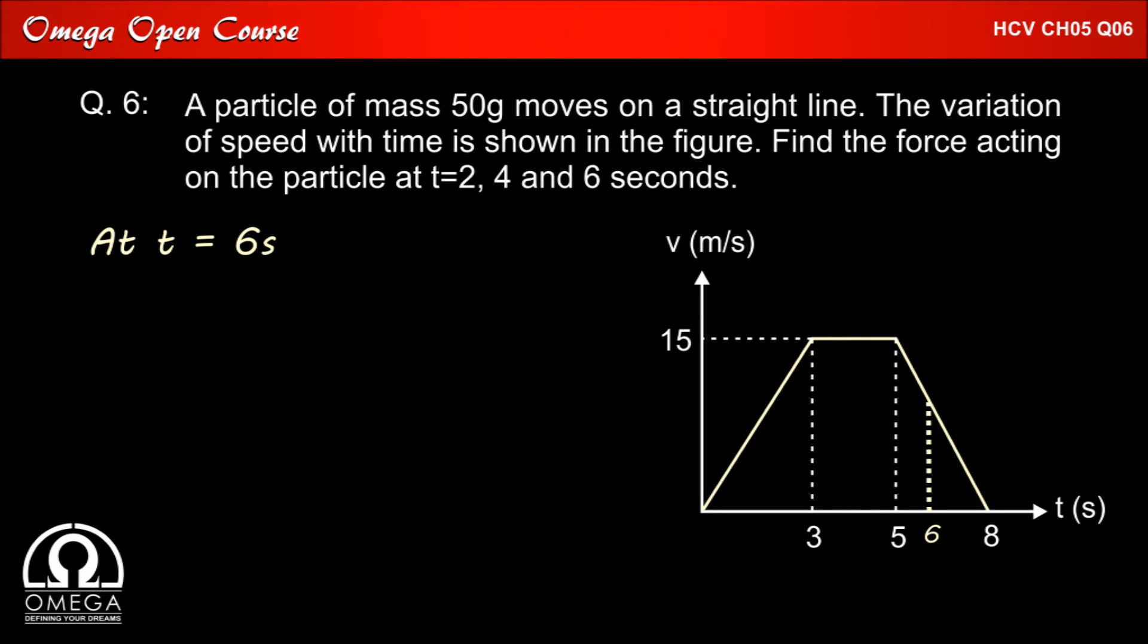In order to find the slope for t equals 6 seconds, we need to find the change in velocity in the 3 second duration from 5 seconds to 8 seconds. The change in velocity during that period is minus 15 meter per second and the time is 3 seconds.